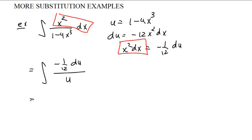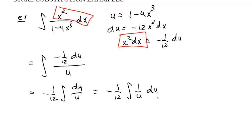This is kind of ugly until you realize that you can pull constants out. And this is negative 1 twelfth of du over u. Or for some reason, it's so much prettier to look at this as negative 1 twelfth integral of 1 over u du. And then you say, I know whose derivative is 1 over u. That would be negative 1 twelfth, the natural log of the absolute value of u plus c.